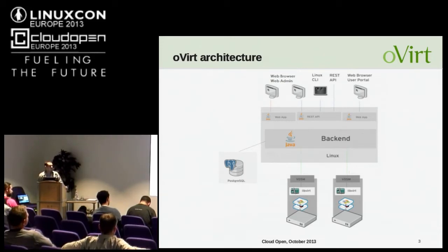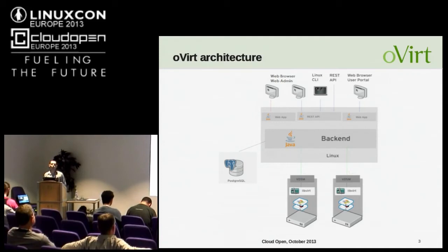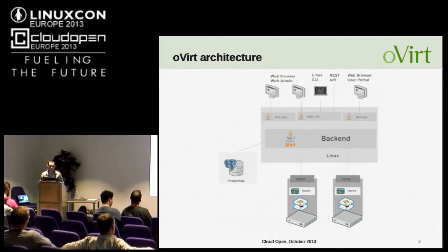There are a couple of clients. One of them is the web admin — a web application which provides a way to do advanced operations intended for administrators, such as defining new networks, new storage, setting user permissions, and so on. Another client is the user portal, a web application which provides a way to do operations intended for users, such as running VMs and connecting to VMs using a console. There are also two more technical clients: the command line interface and the REST API.